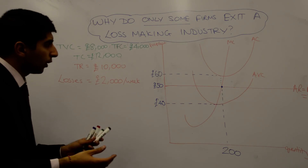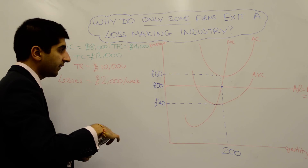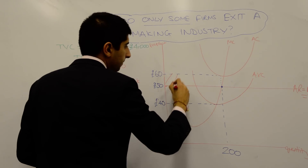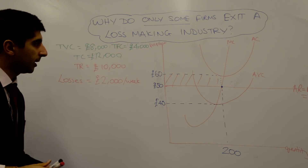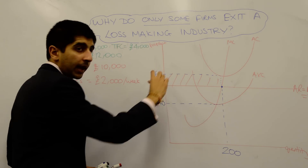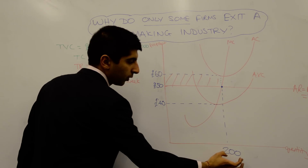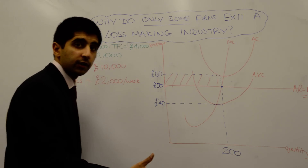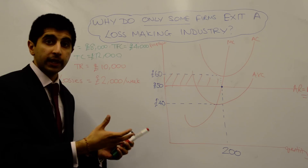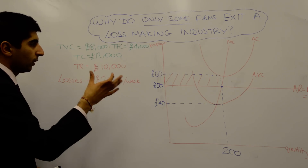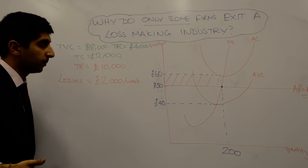The losses being made are represented by this shaded area in red. It's a £10 difference — between £50 and £60 average cost — times the quantity of 200, which gives us £2,000 total losses. And let's assume this is happening per week, so £2,000 per week in losses.